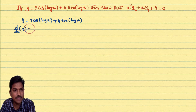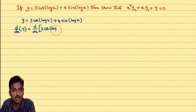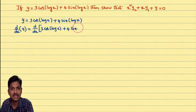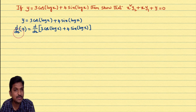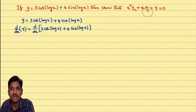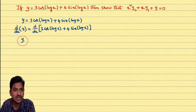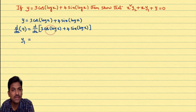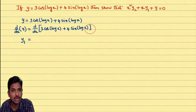Differentiating both sides: d/dx of y = d/dx of [3cos(log x) + 4sin(log x)]. Derivative of y with respect to x is dy/dx, which is y₁, the first-order derivative. We differentiate each and every term: derivative of 3cos(log x) plus derivative of 4sin(log x).